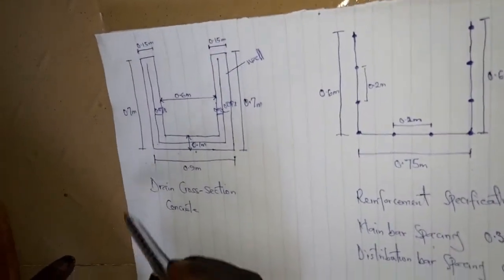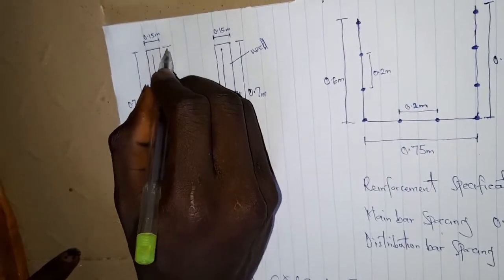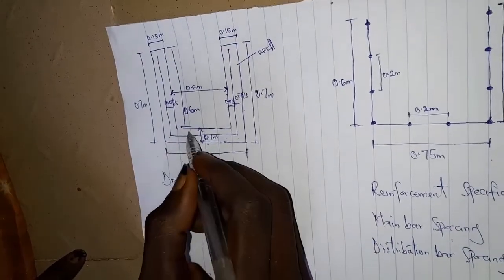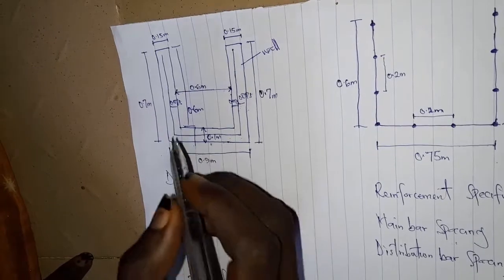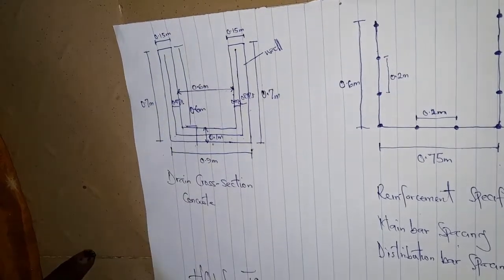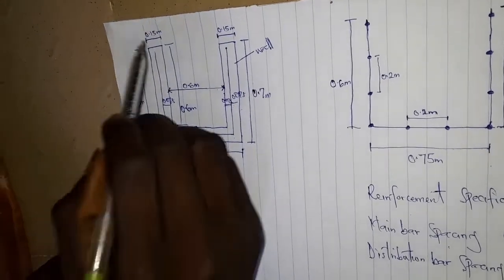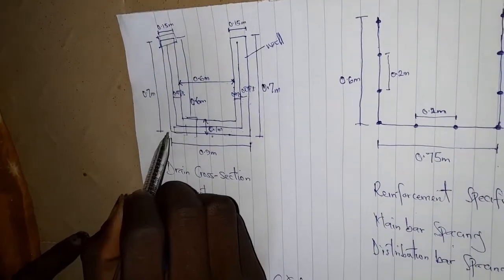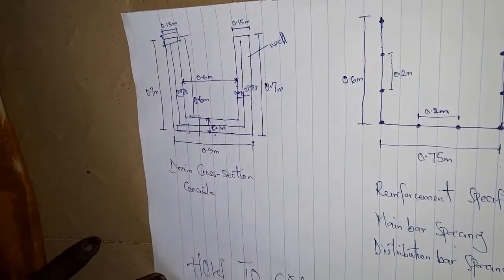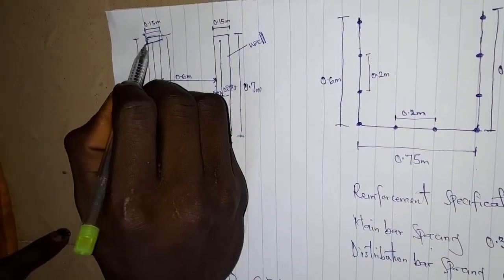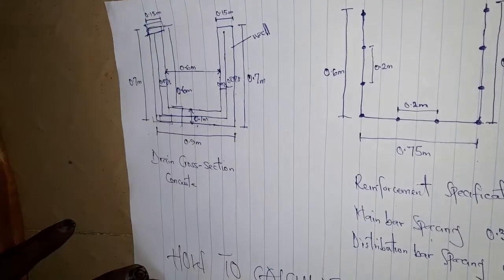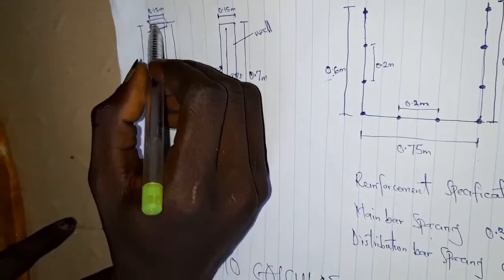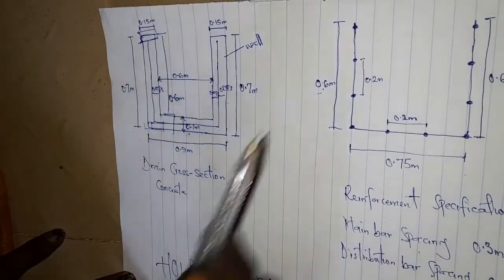For the height, the drainage from the base is 0.6 meter, and we have the base which is 0.1 meter, making it 0.7 meter total. However, we are not going to use 0.7 because of the mortar cover to protect the iron from touching the ground. So 0.05 will be cut short at the top and 0.05 at the bottom, giving us 0.6 meters for the height of the reinforcement.